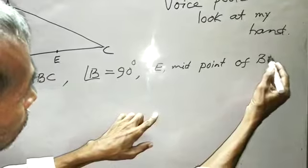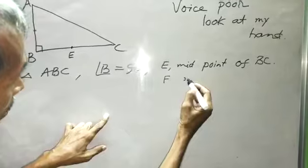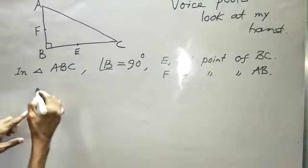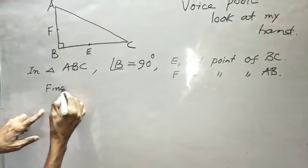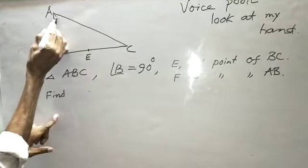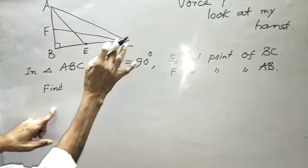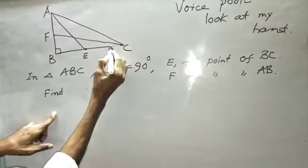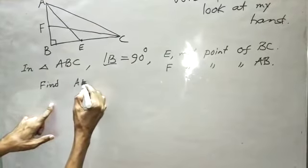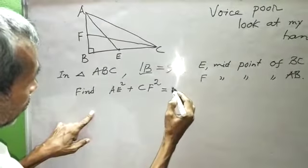We need to find BC. With E as the midpoint of AB and F as the midpoint of BC, find AE square plus CF square equal to what?